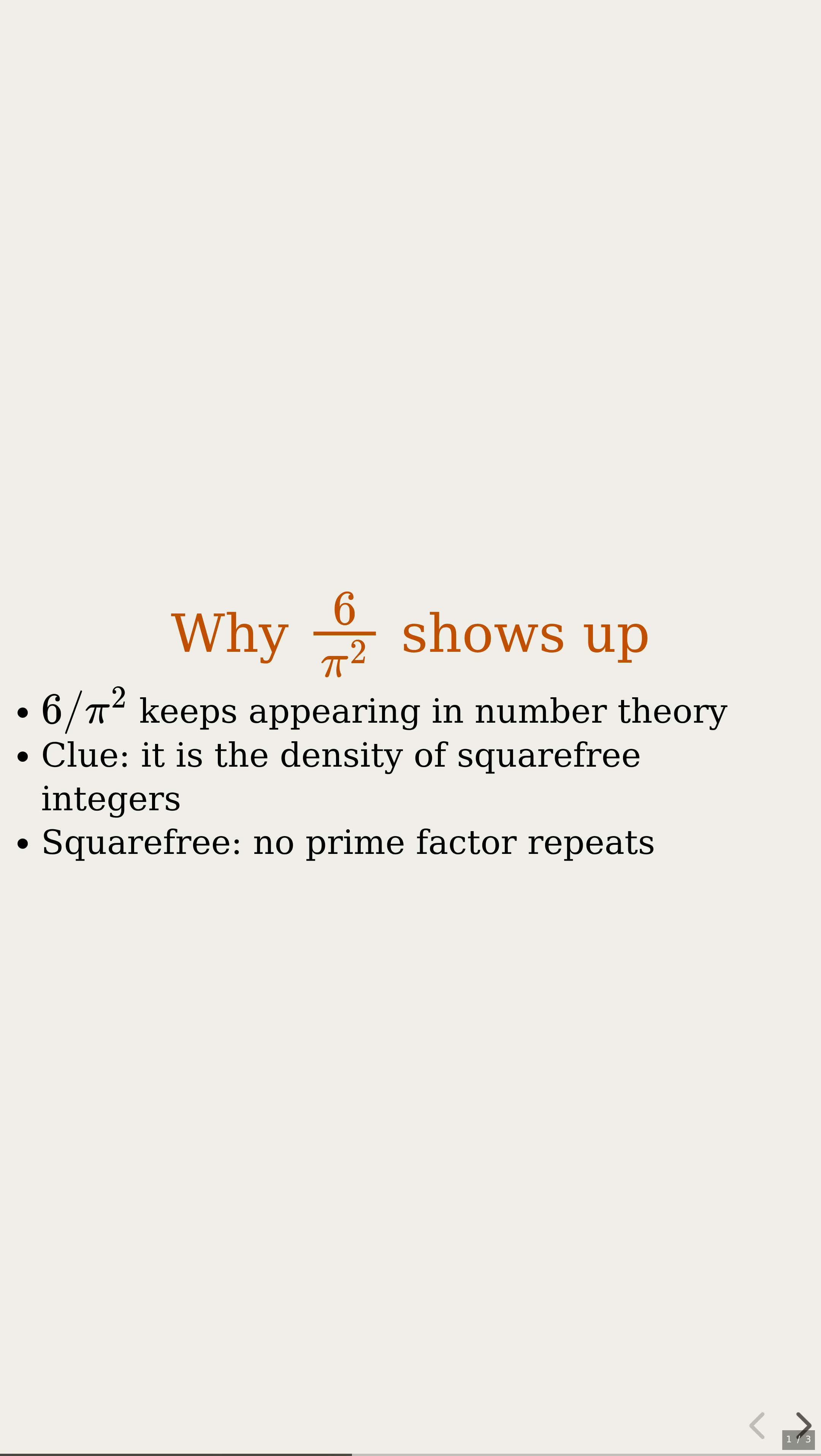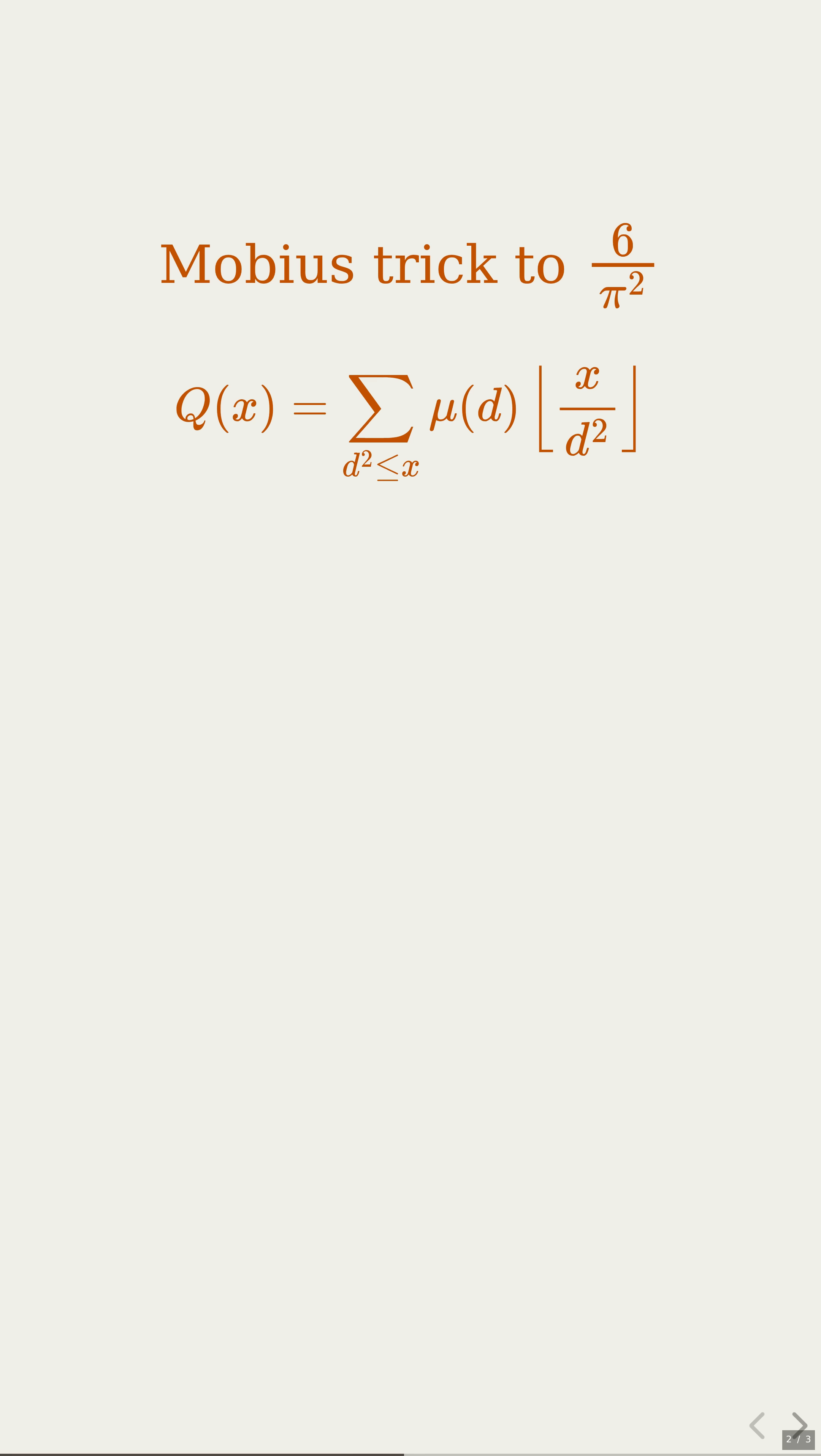A clever use of the Mobius function links that density to a series, and that is where the constant 6 over pi squared sneaks in. Here is the compact formula hiding behind the scenes. It looks intense, but I'm listening.